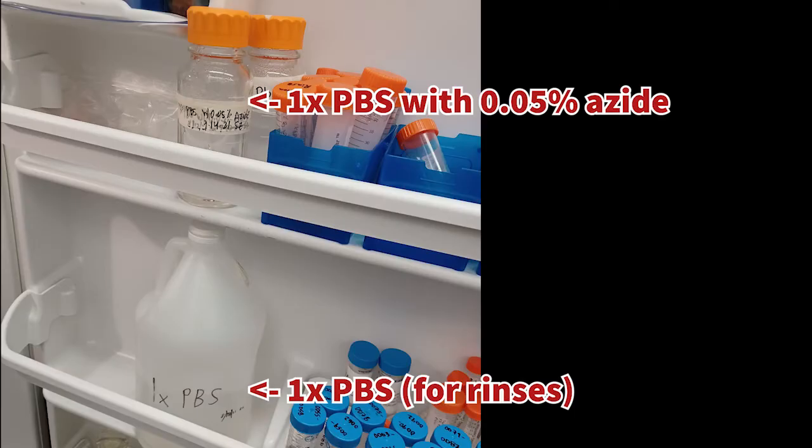After you finish the three PBS rinses, rinsing is now complete. We will now prepare the netwells for wet storage in the fridge. Grab the 250ml bottle labeled PBS with 0.05% azide.